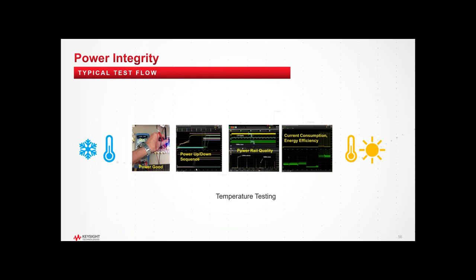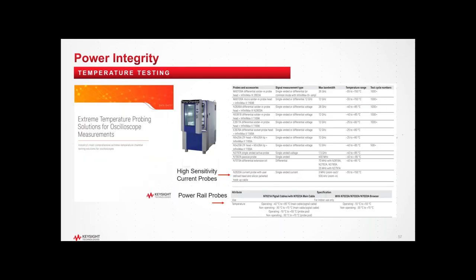Finally, Keysight offers extreme temperature probing solutions. The high sensitivity current probes and power rail probes can operate over a wide temperature range that usually meets or exceeds the temperature requirements you'll be testing to, so you can put your product in a thermal chamber and verify power integrity at both high and low temperatures.